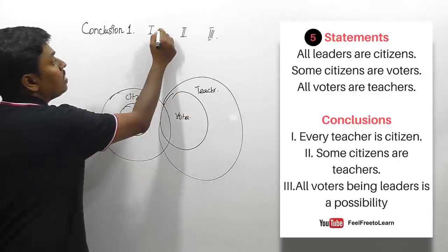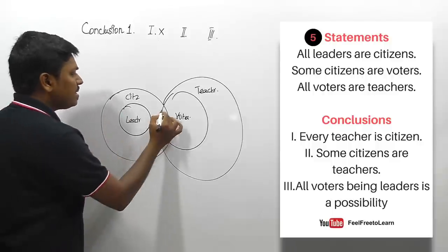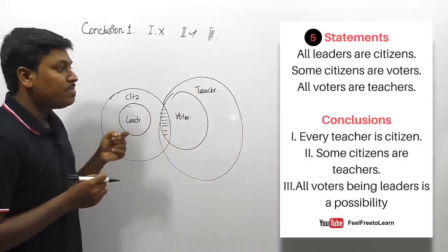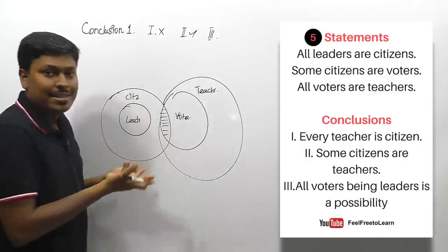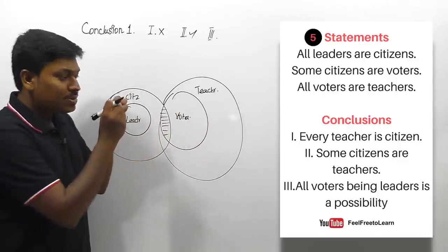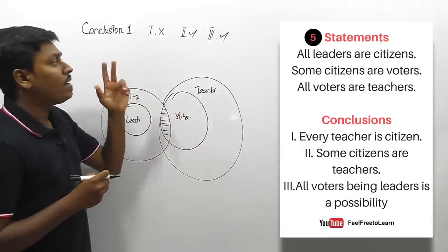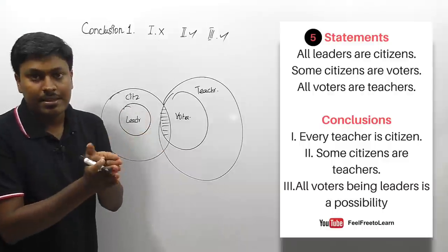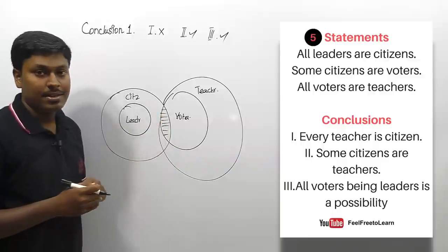Conclusion number two: 'some citizens are teachers' — which is exactly correct, so conclusion two follows. Conclusion number three: 'all voters being leader is a possibility' — voter and leader are inside a single Venn diagram, and if all parameters are inside a single Venn diagram, possibility always follows. So for this question, two and three follow. Remember: 'each' and 'every' both denote 'all.'